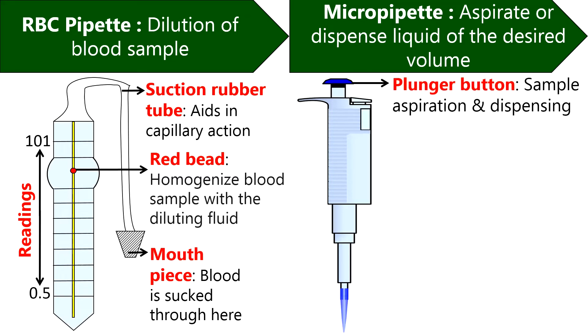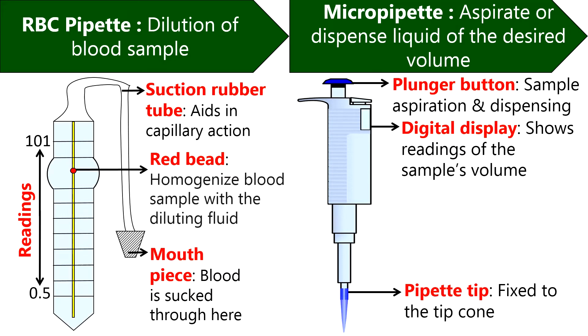We can adjust the volume of the sample that has to be aspirated or dispensed by rotating the plunger button clockwise or anticlockwise. And we can press and depress the plunger button to aspirate or dispense the sample. Digital display shows the reading of the sample's volume in microliters.